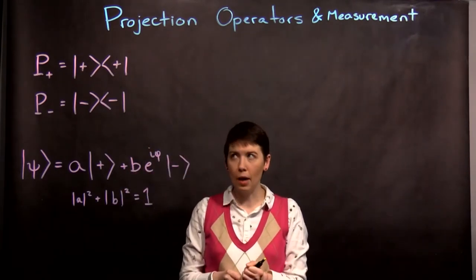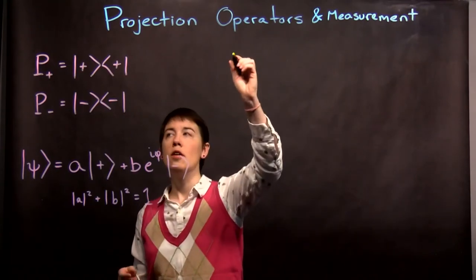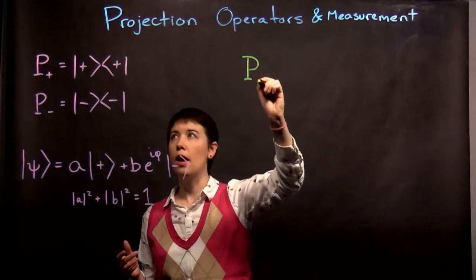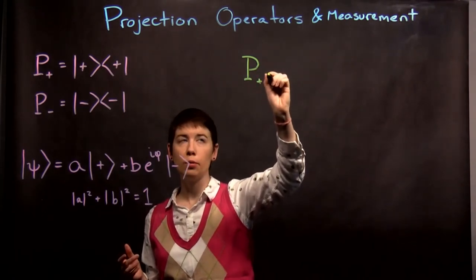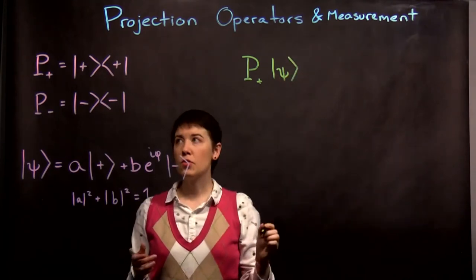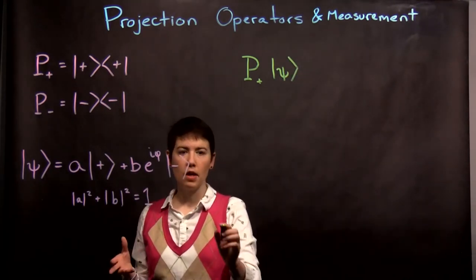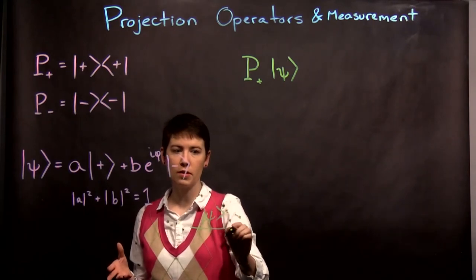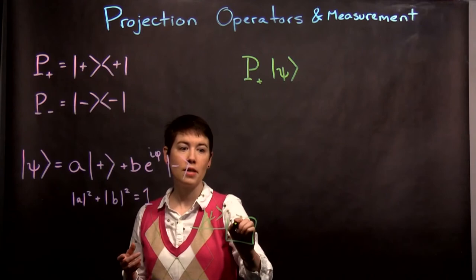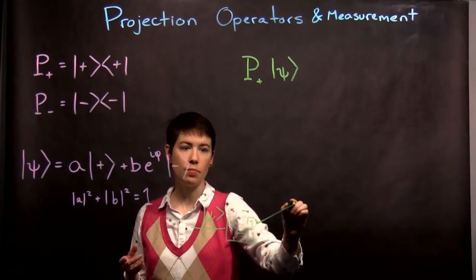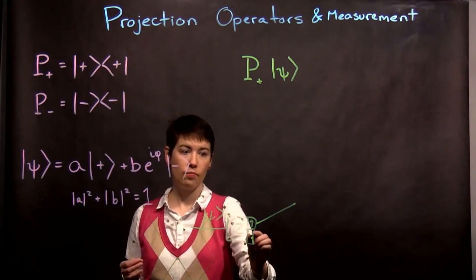So what happens if I apply my projection operator up for spin up to psi? This is basically saying I had some incoming beam, which is my psi, then this has gone through my z analyzer, and my spin up is my subsequent thing. So here we kind of just had some count, and here we're going to call this psi prime.